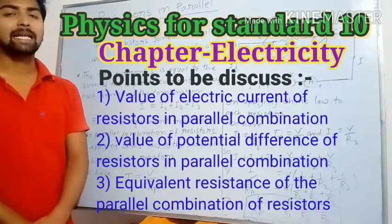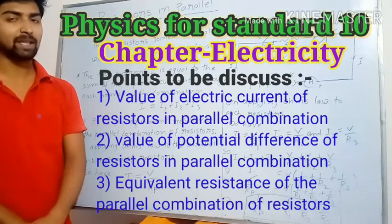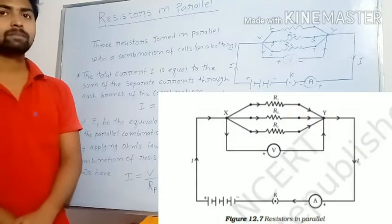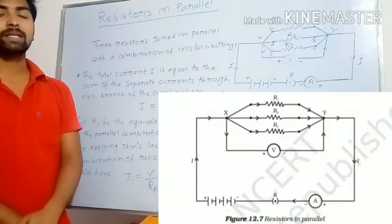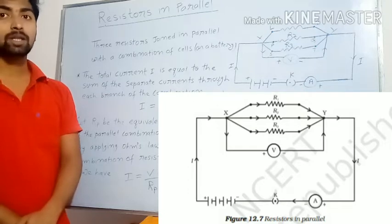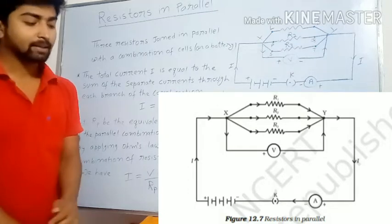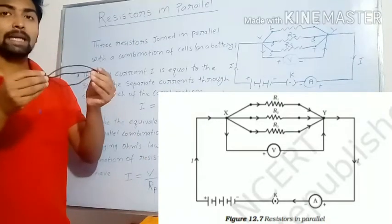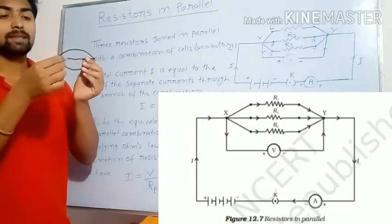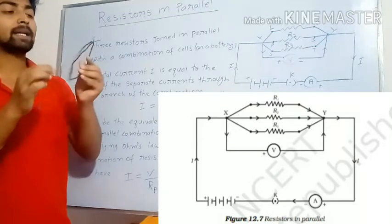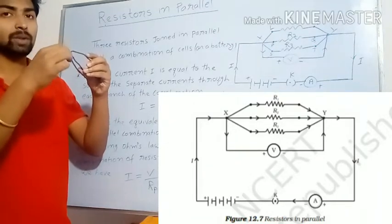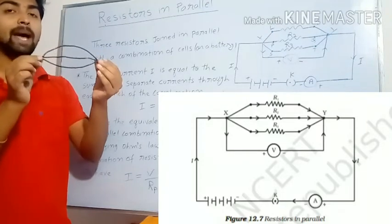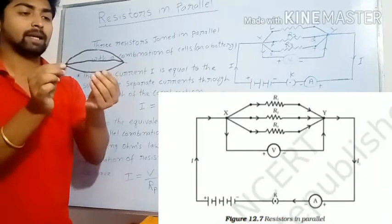Hello students, welcome to the e-learning class of St. Michael's Academy. Earlier we studied that when two or more resistors are combined so that one end of all resistors join together and the other ends also join together, this type of combination is called a parallel combination of resistors.